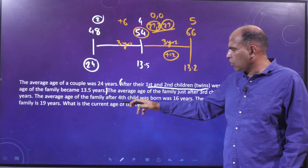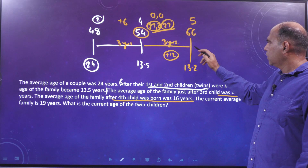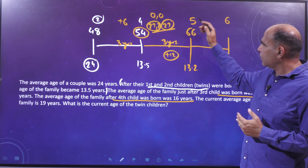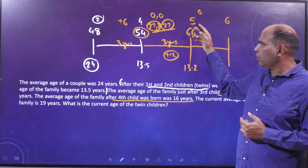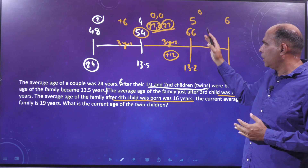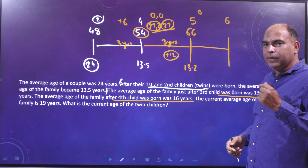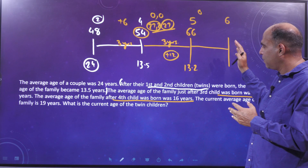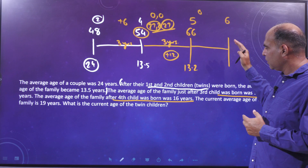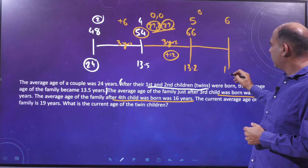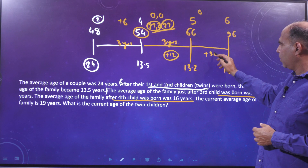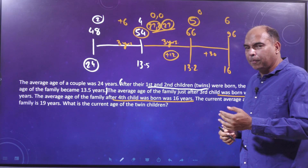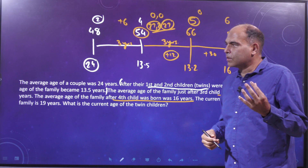The average age of the family after the fourth child was born is 16 years, meaning six people with a total age of 96. The total increased by 30 from 66. Since five people's ages were increasing, and the new sixth person is born at age 0, we need 5 times something to equal 30, so this timeline segment is 6 years.